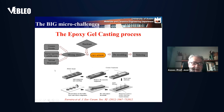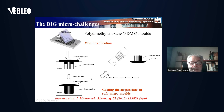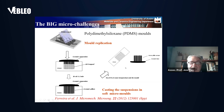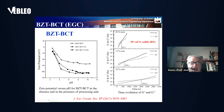Epoxy gel casting involves ceramic powder deagglomeration and dispersing, adding an epoxy resin, and after obtaining a homogeneous slurry, adding an amine-based hardener that promotes gelation. Then we can demold and sinter. We use polydimethylsiloxane (PDMS) molds, and casting was assisted by vacuum to remove air bubbles and obtain completely cast parts. The suspension is self-set by epoxy gel casting and can later be unmolded.